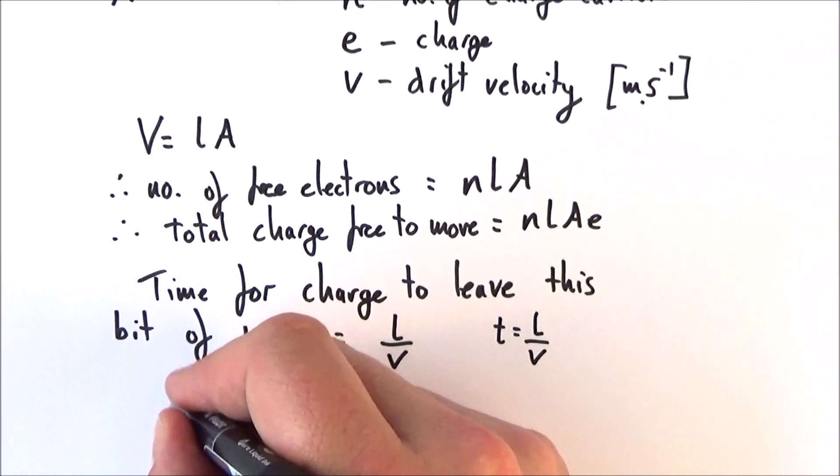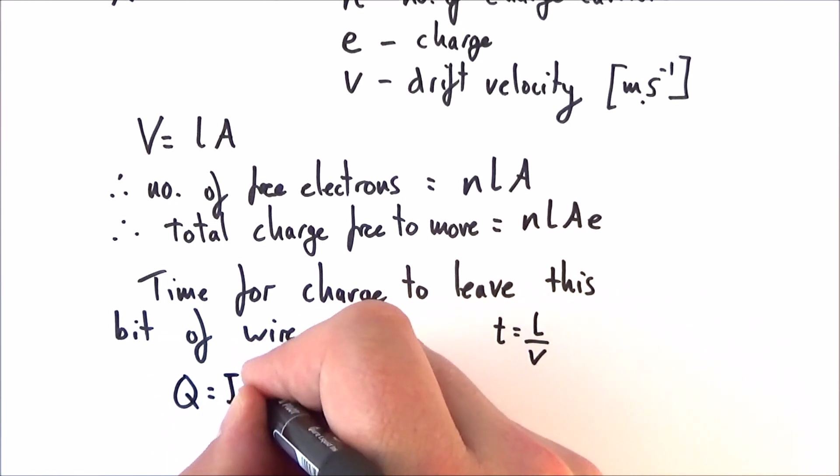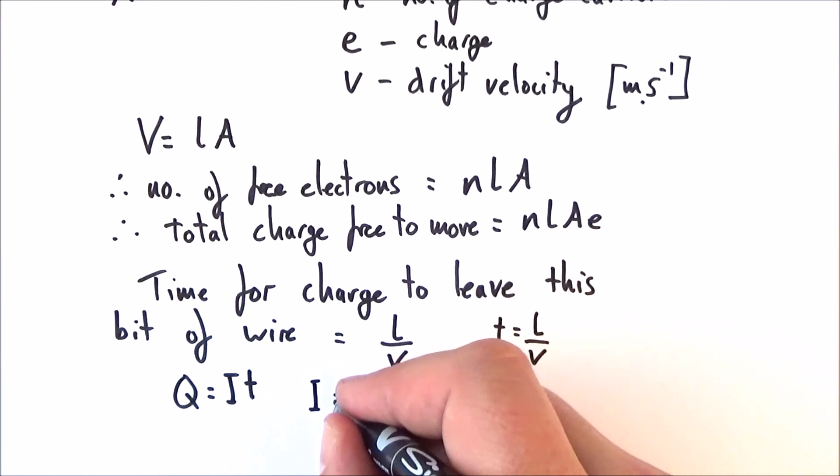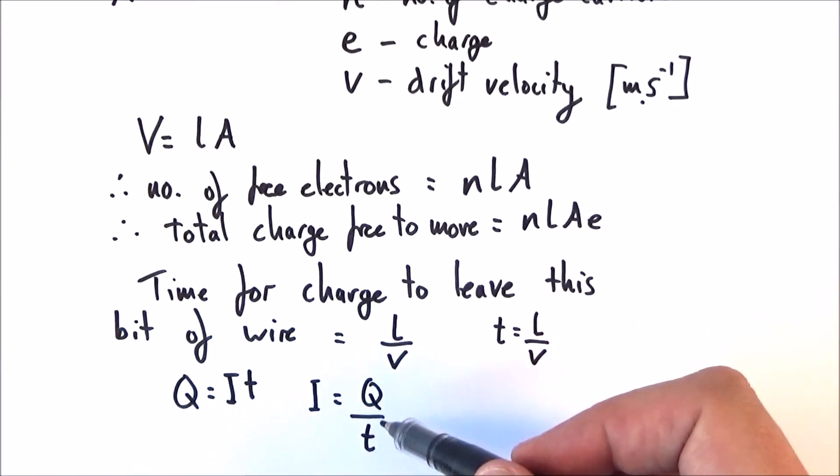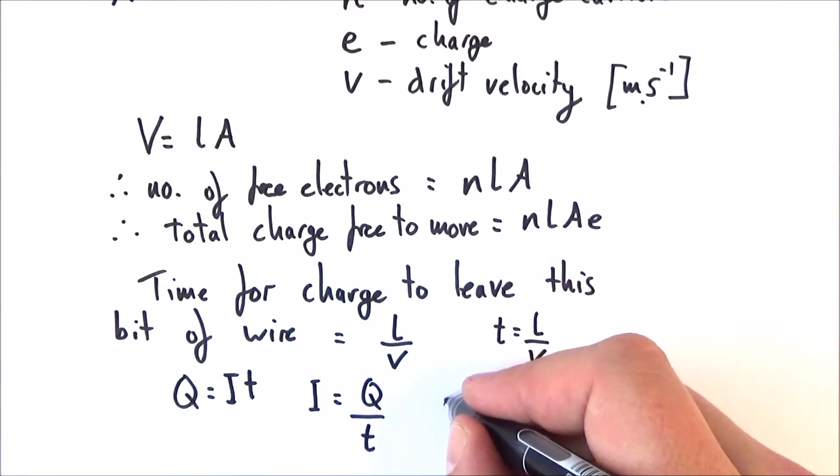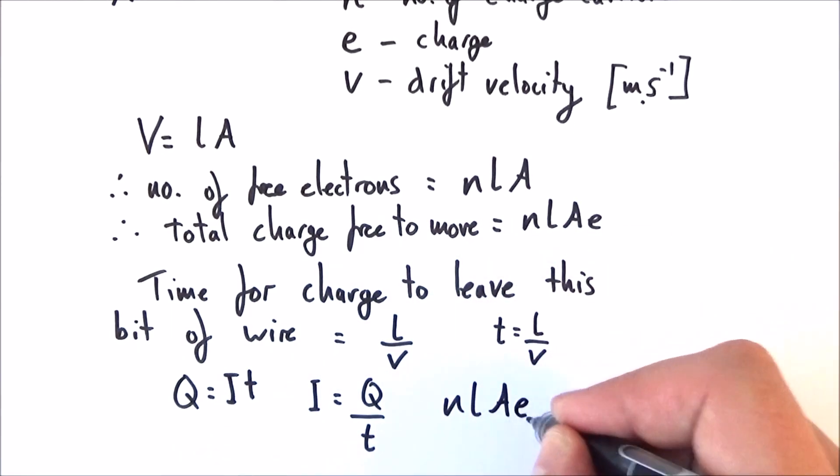Now, we know that Q is equal to IT, that the charge is equal to the current multiplied by time. And therefore, the current I is equal to Q over t. Now, we've already said that the total charge, which is free to leave, is equal to nLAe. And also that the time it takes is going to be equal to L over V.